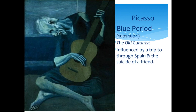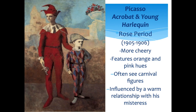Moving to Picasso — he wasn't just a Cubist painter. He was trained classically like other European artists and experienced two earlier periods. His Blue Period was influenced by the suicide of a friend and a trip through Spain — all his paintings have a blue hue, like The Old Guitarist. Then came his Rose Period, more cheerful, featuring pinks, oranges, and tans, often with carnival figures, influenced by a warm relationship with a mistress.